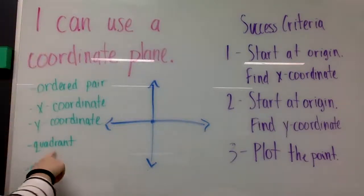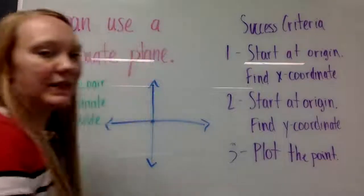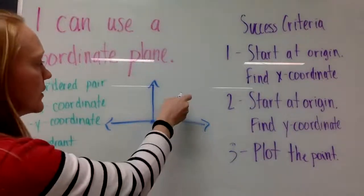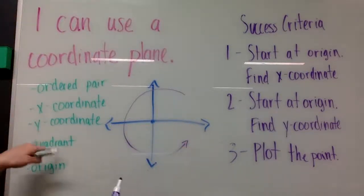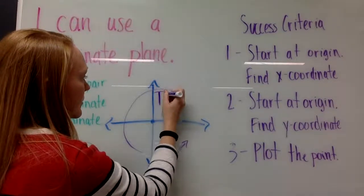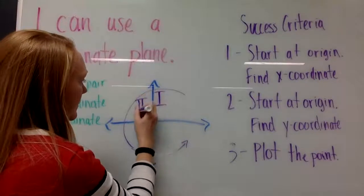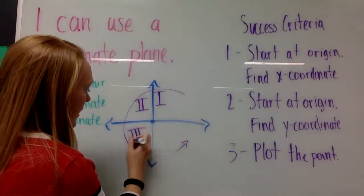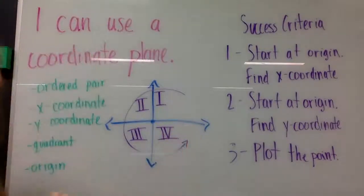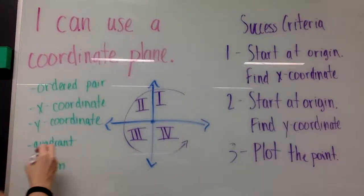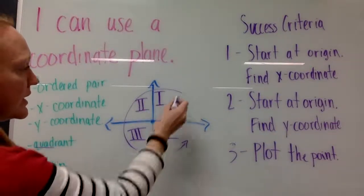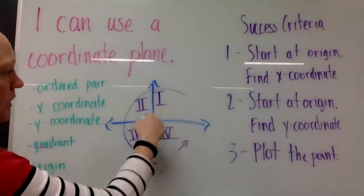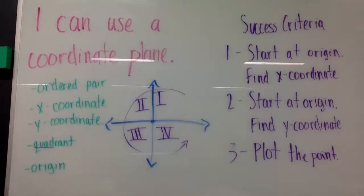A coordinate plane has four sections called quadrants, and they go in the shape of a C. When you write a C, you start at the top and make a curve — that's the way it goes with counting the quadrants: quadrant one, quadrant two, quadrant three, quadrant four. You probably recognize that prefix 'quad' meaning four. The four quadrants go in the shape of a C: one, two, three, four.